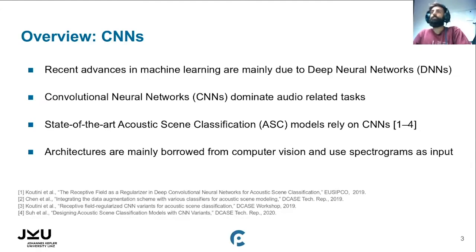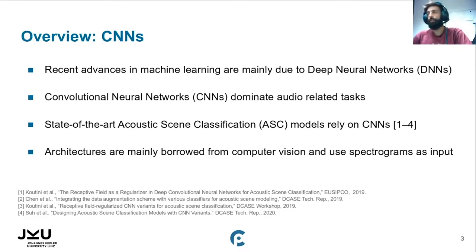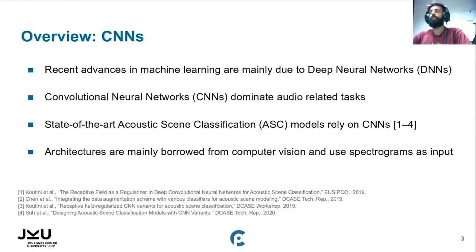Recent advances in machine learning are mainly in deep learning, especially convolutional neural networks. They dominated vision and audio tasks, as we can see in the DCASE workshop and challenge submissions. Acoustic scene classification state-of-the-art models are mainly CNNs. These CNN architectures are borrowed fully or in part from famous vision architectures like VGG and ResNet, and they use spectrograms as input.